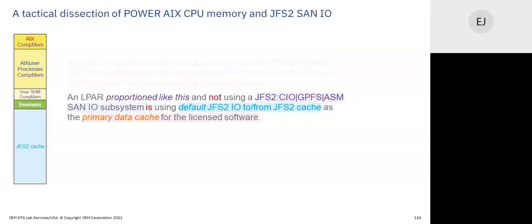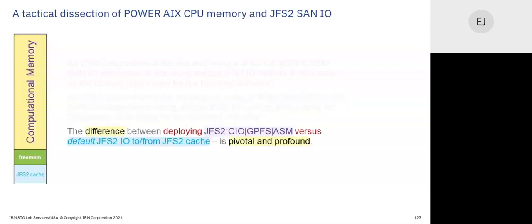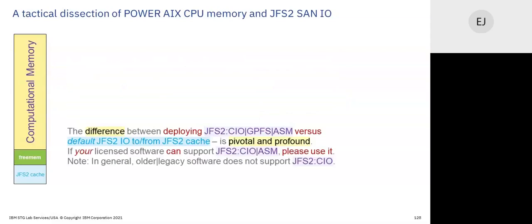The traditional model originated in the era of small memories and SCSI disks — very different reality from today. The difference between deploying direct I/O methods versus using the default is pivotal and profound, especially when deploying SSD, flash, and SAN storage technologies. In general, old software can't use CIO, ASM, or GPFS — please use them where you can, because during COVID 2020 I've had so many engagements converting customers from default to CIO with dramatic results.